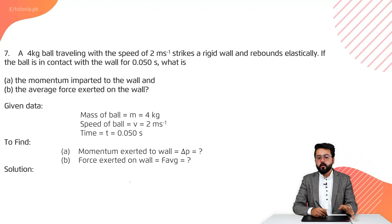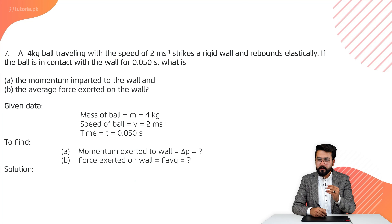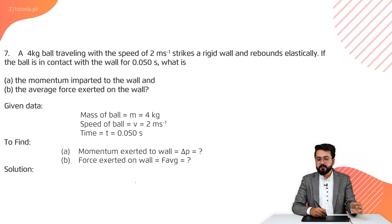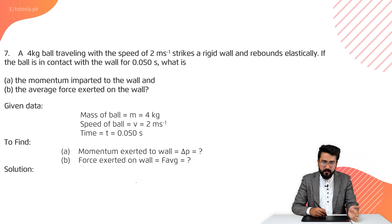Problem number seven: a 4 kg ball traveling with a speed of 2 meters per second hits a rigid wall and rebounds elastically. If the ball is in contact with the wall for 0.05 seconds, find the momentum imparted to the wall, the momentum imparted to the ball, and the average force exerted on the wall.